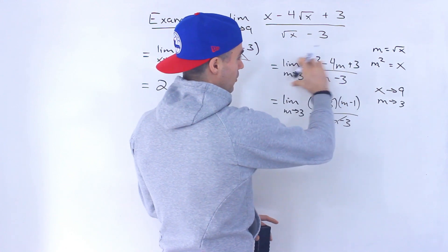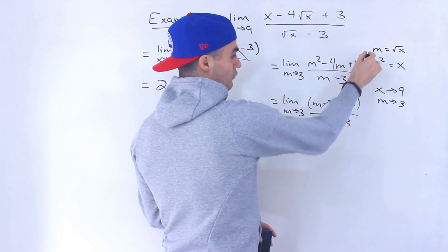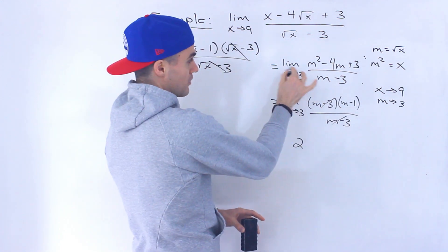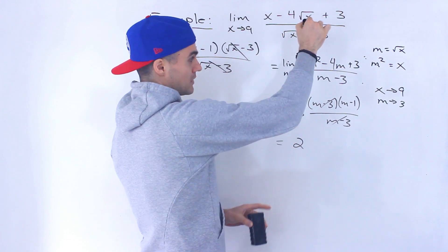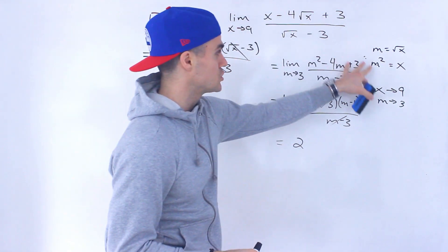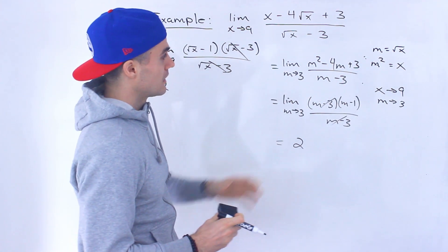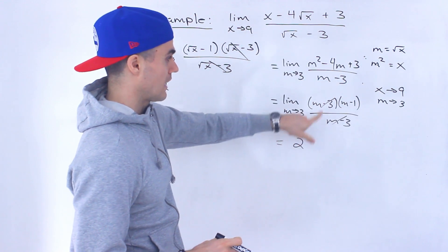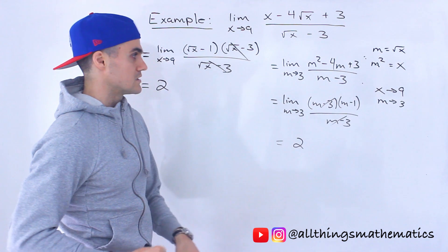Another thing I forgot to mention is at this point, notice that if we still do a direct substitution, we'd still have that 0 over 0 format. If we sub in 3 for m, just like when we sub in 9 for x up here, we still have that same format, which makes sense because we just changed the variable, but the results should remain the same. And then we go into factoring, and then we're left with this m minus 1, and then we get 2.